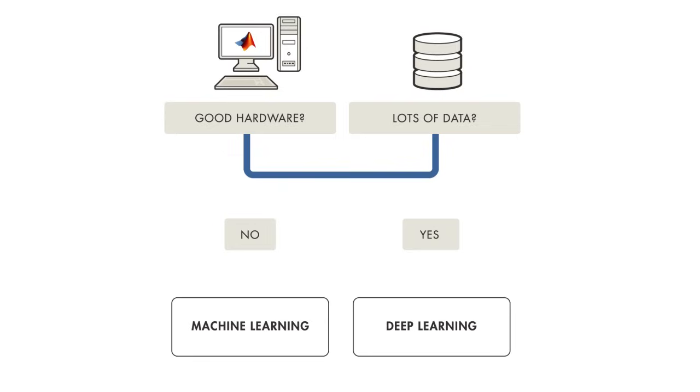When choosing between machine learning and deep learning, you should ask yourself whether you have a high-performance GPU and lots of labeled data. If you don't have either of these things, you'll have better luck using machine learning over deep learning.